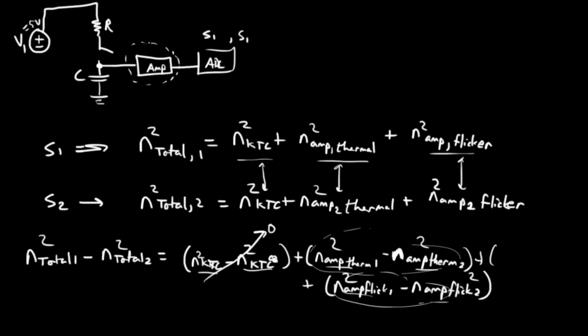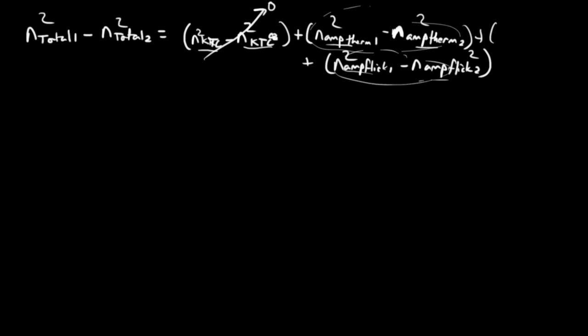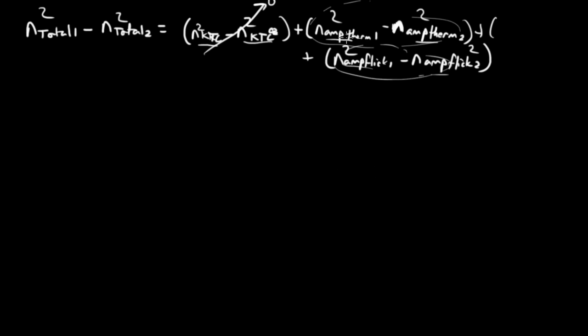And now I'm going to get a little hand wavy, because since this thermal noise component is uncorrelated with this thermal noise component, by subtracting one from the other, we've actually doubled the noise power, and that's exactly what's happened there too. So this is going to be equal to zero plus two times NAMP thermal squared. Now notice there's not a designation for it being from sample one or sample two, plus two times NAMP flicker squared.